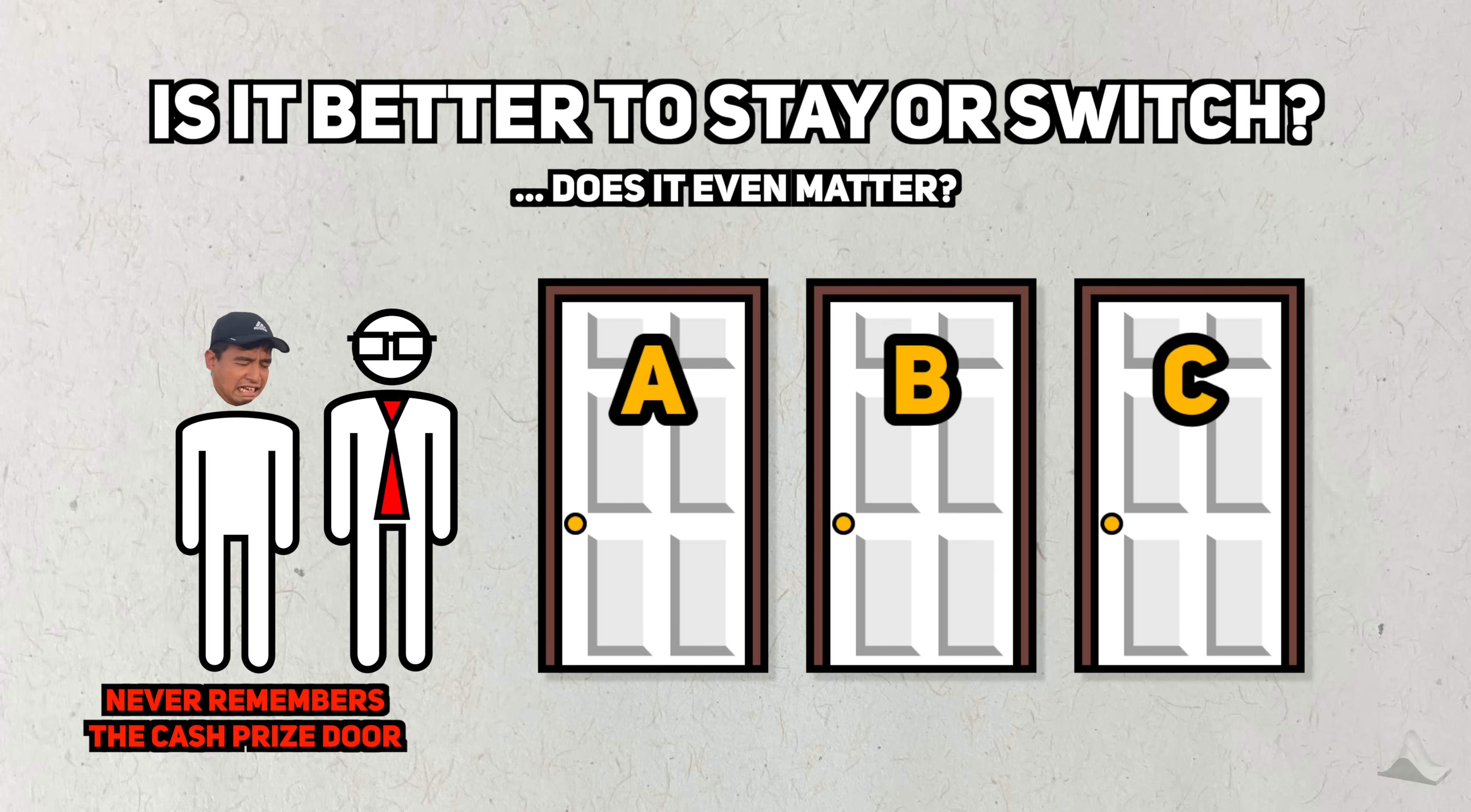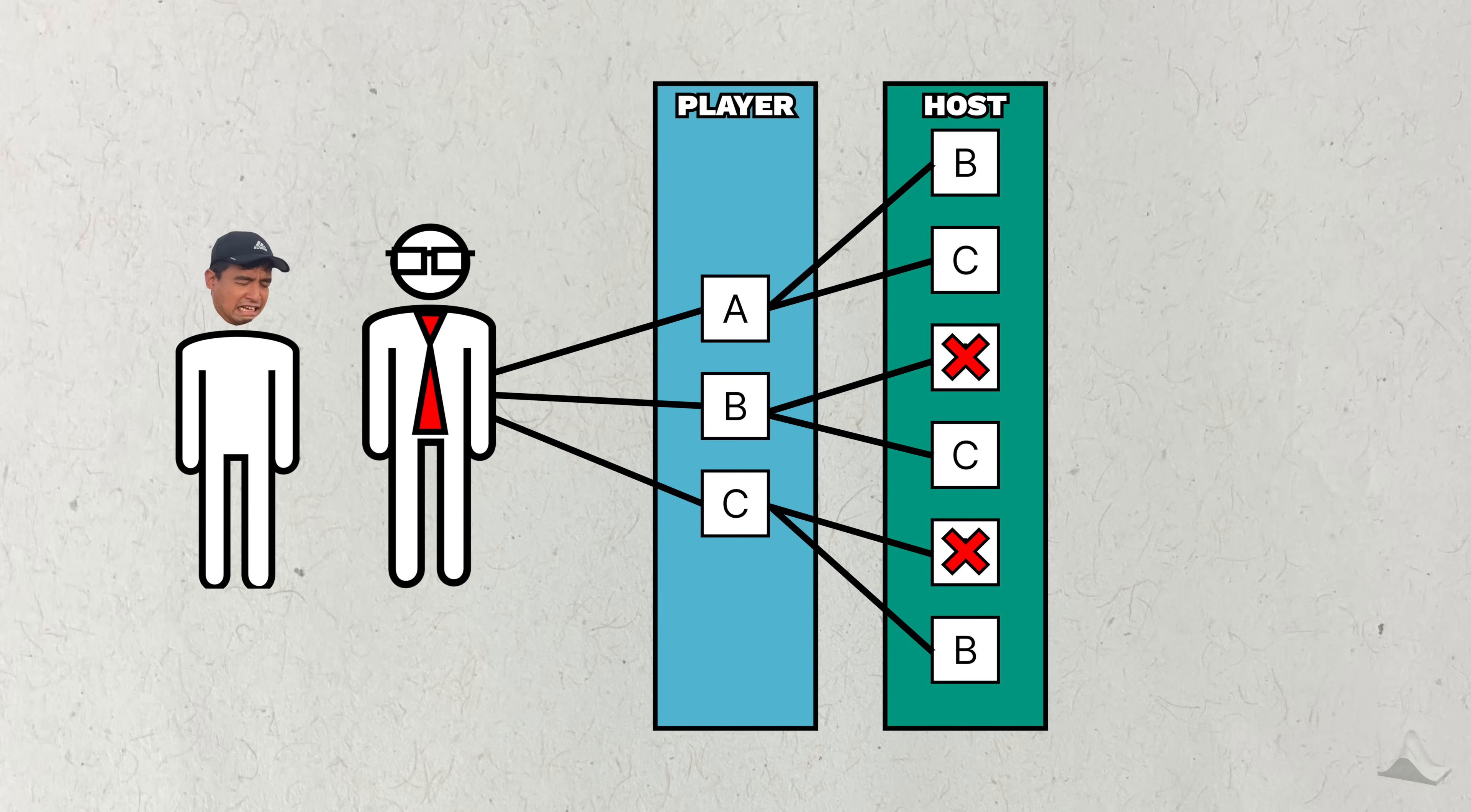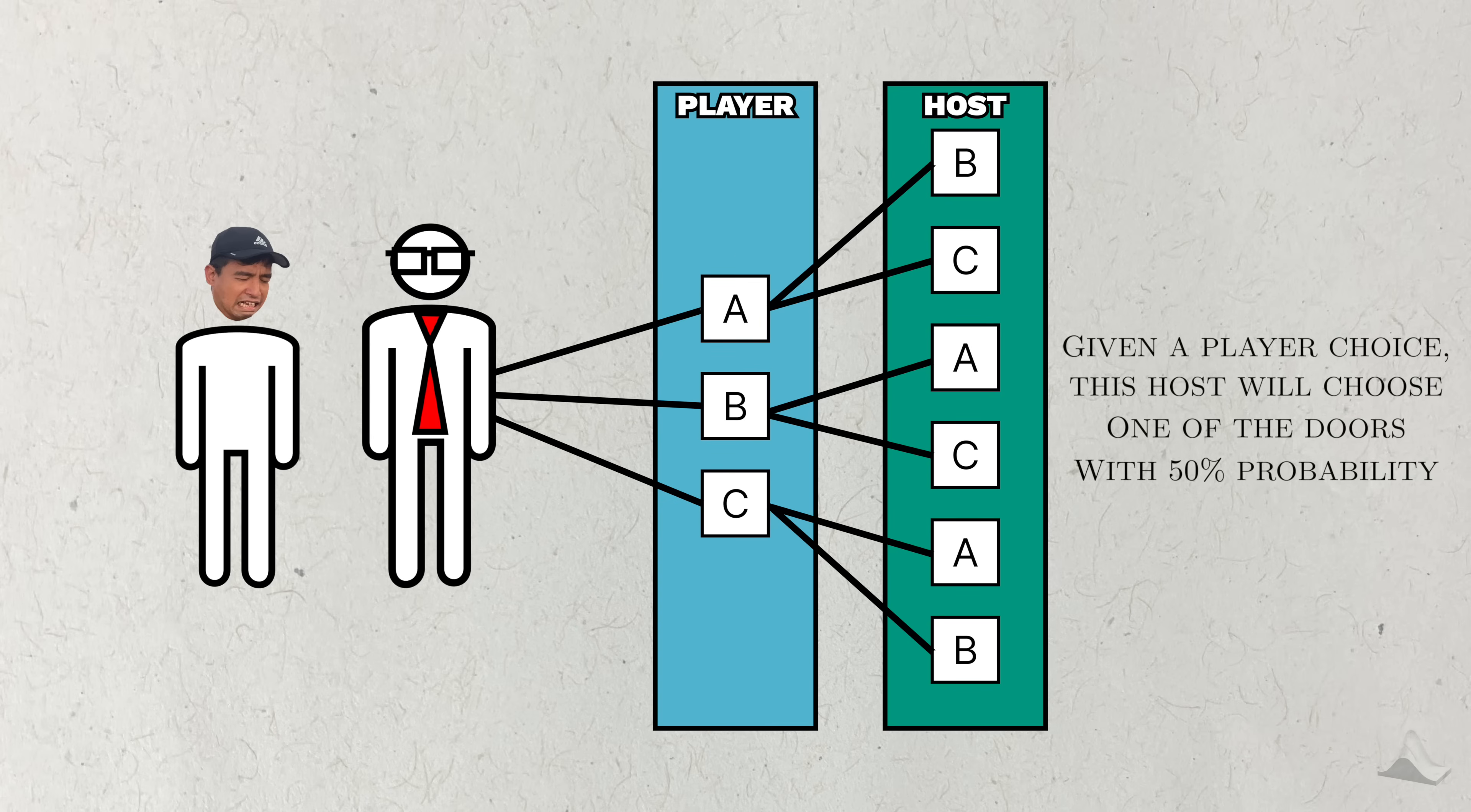Take some time to think it through and I'll tell you what happens. In the original version, the host can correctly react to the player's choice and choose a door that will not have the cash prize behind it. But our new host doesn't do that. The original player choices remain the same, but the paths for the host's choice change. Instead of avoiding the door that has the cash prize behind it, they'll pick it with 50% probability.